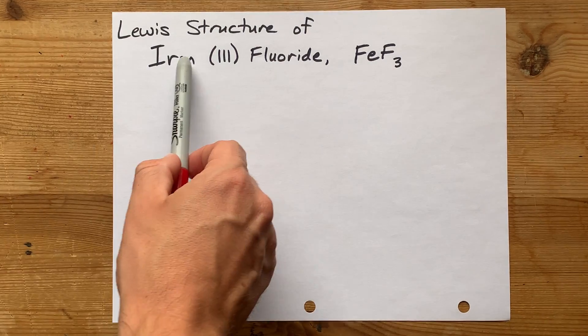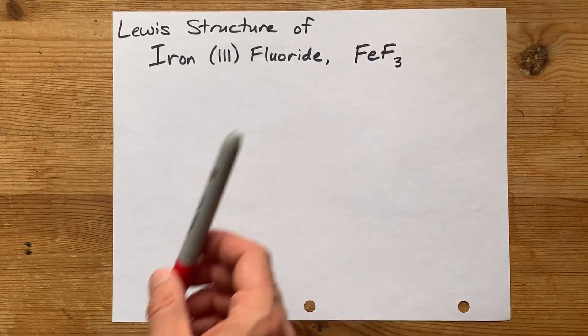We're going to draw the Lewis structure for iron 3-fluoride. That's FeF3.